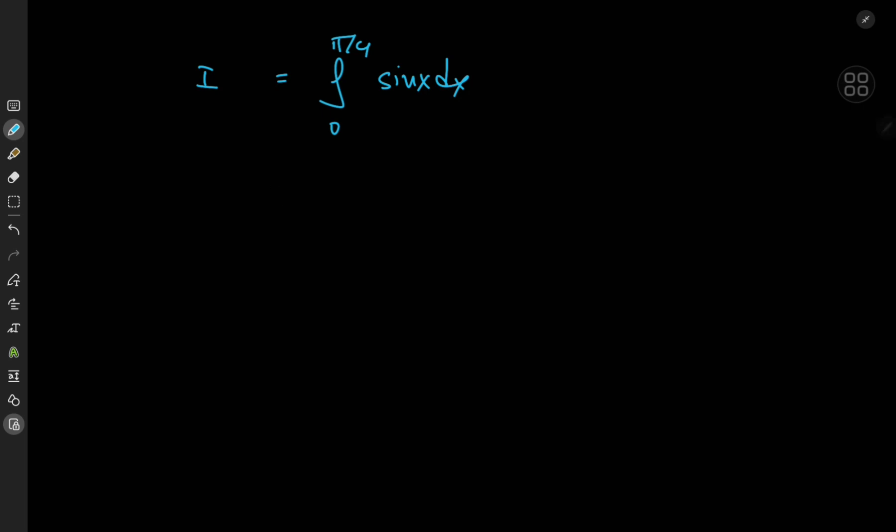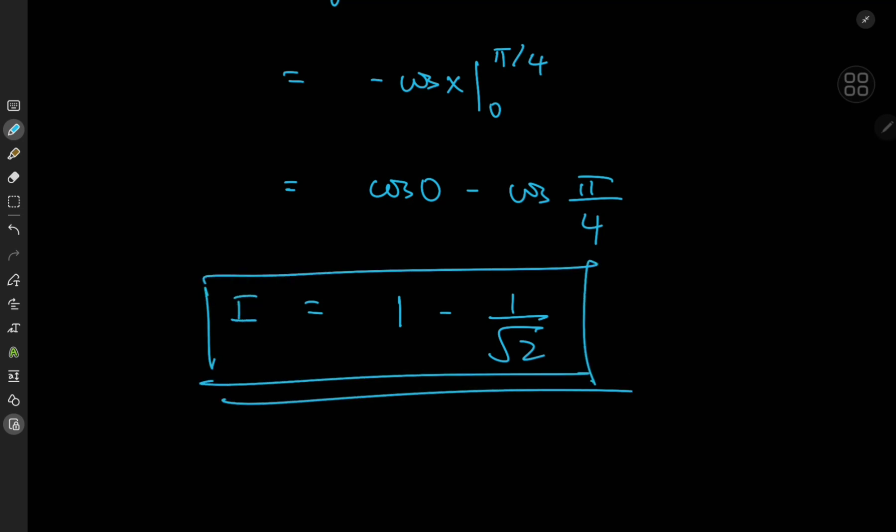So let's just deus ex machina this and call it negative cosine x, with the limits being 0 and pi by 4, meaning that we have cosine 0 minus cosine pi by 4, and recent sightings have reported that cosine 0 is 1, and similar reports suggest that cosine pi by 4 is 1 by root 2, so we're just going to believe them, and that's what the target integral sorts out to.